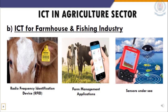ICT for farmhouse and fishing industry: RFID — Radio Frequency Identification Device — can identify and count the number of animals in a large area. Farm management applications allow farmers to use computer software to keep track of farm information, calculate profits and losses, save employee salary details, monitor market rates, get updated business information, and exchange information.